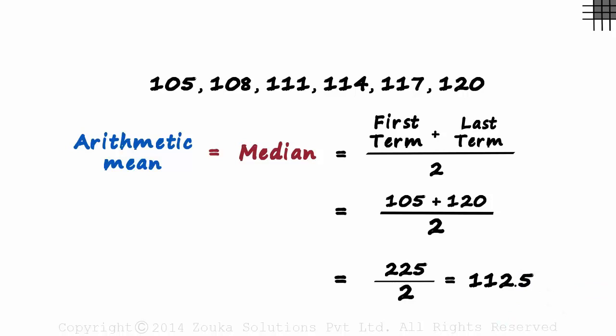Now wasn't that quick? For any set of evenly spaced numbers, the arithmetic mean and the median both will equal the average of the first and the last terms of that set. And why is it quicker? For the mean, we did not have to add up all the numbers in the set. And for the median, we did not have to figure out the middle value. We just need to use this simple formula.